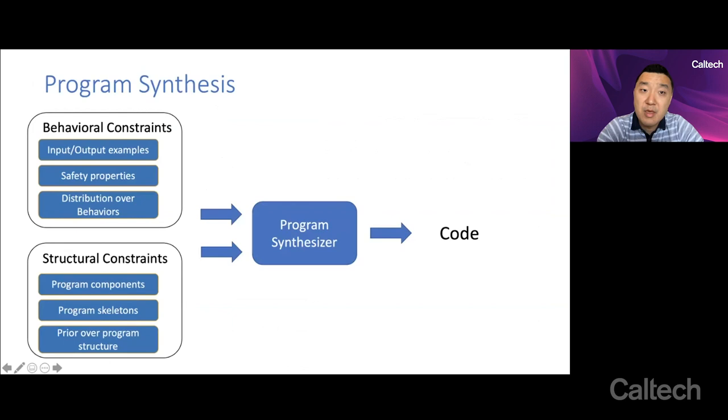One area of this revolution is called program synthesis. Program synthesis is essentially very much like machine learning in the following sense: You have as input behavioral constraints. These could be input-output examples. For this input, the synthesized program should obey this output. You may have properties, distributions over desired behaviors, and then you also have structural constraints such as the program components, the programming language, the libraries, the skeletons, and prior over the program structures. You feed all this into a program synthesizer and you get out a program or a piece of code.